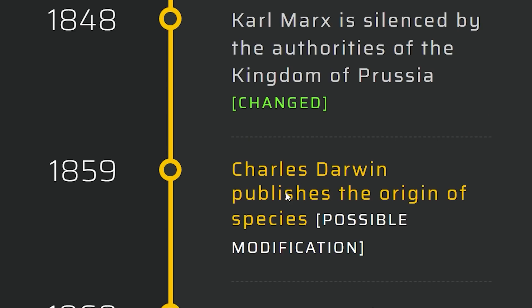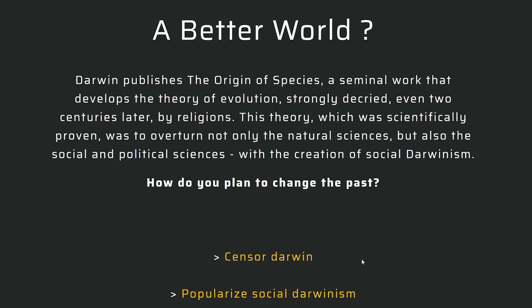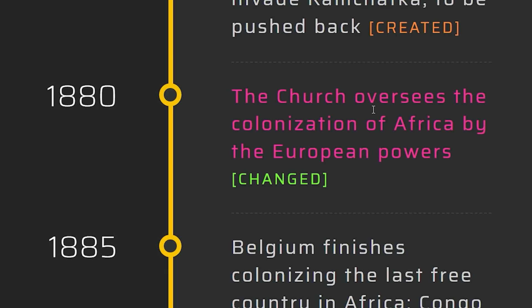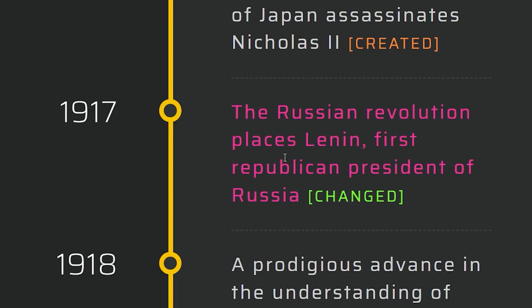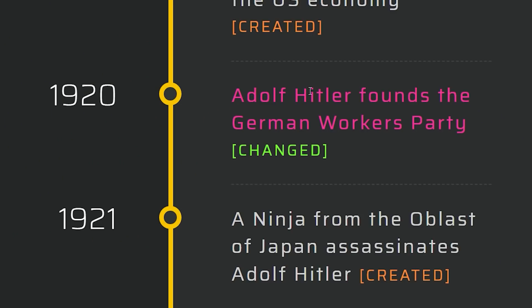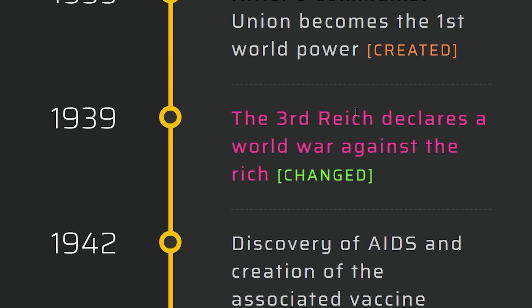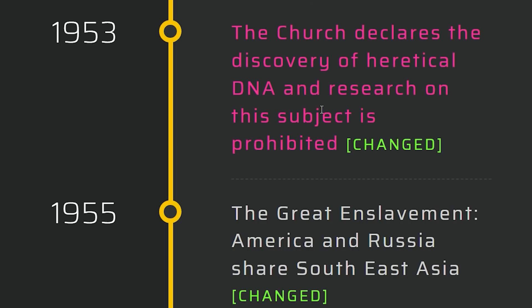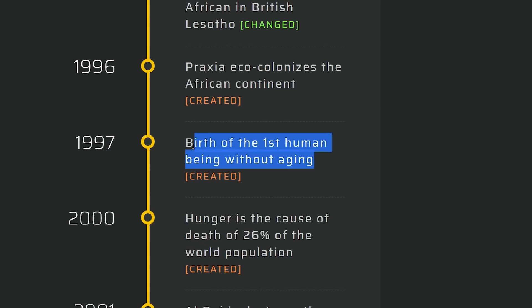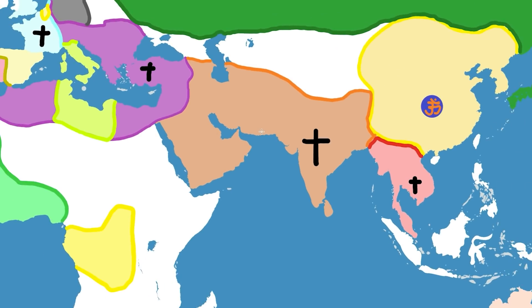Charles Darwin publishes The Origin of Species — we either censor Darwin or popularize social Darwinism. Let's censor him. We already have a lot of faith in this world. His writings are considered dangerous. The Church oversees the colonization of Africa by the European powers — so they're now allowing and maybe excited to do it. Church gives an opinion against the vote of women, which is abandoned. The Russian Revolution places Lenin as first Republican president of Russia. Hitler founds the German Workers' Party, which is going to be communist. Third Reich declares world war against the rich. Declares the discovery of hierarchical DNA, and research is prohibited. This just made India even more powerful, I think.